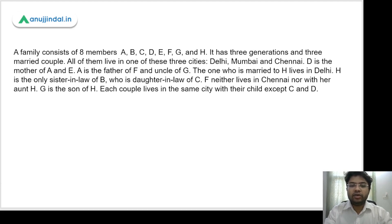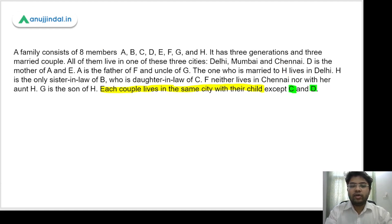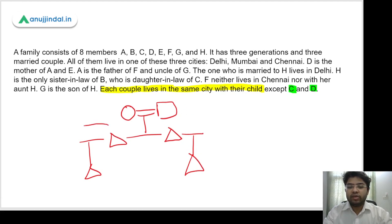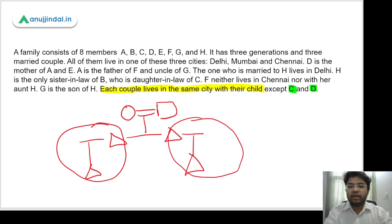Now that we've read the question, we need to pay attention to the clue: each couple lives in the same city with their child, except C and D. This is a family of 3 generations. Let's say this is the first couple — they have some children. Each couple would be living in one city. But continuing this logic, the grandparents and their son are also a couple, and they'd all end up living in the same city.